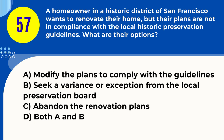Question 57. A homeowner in a historic district of San Francisco wants to renovate their home, but their plans are not in compliance with the local historic preservation guidelines. What are their options? A. Modifying the plans to comply with the guidelines B. Seek a variance or exception from the local preservation board C. Abandon the renovation plans D. Both A and B. Answer: D. Both A and B. Explanation: Renovating in a historic district requires modifying plans for compliance or seeking a variance.